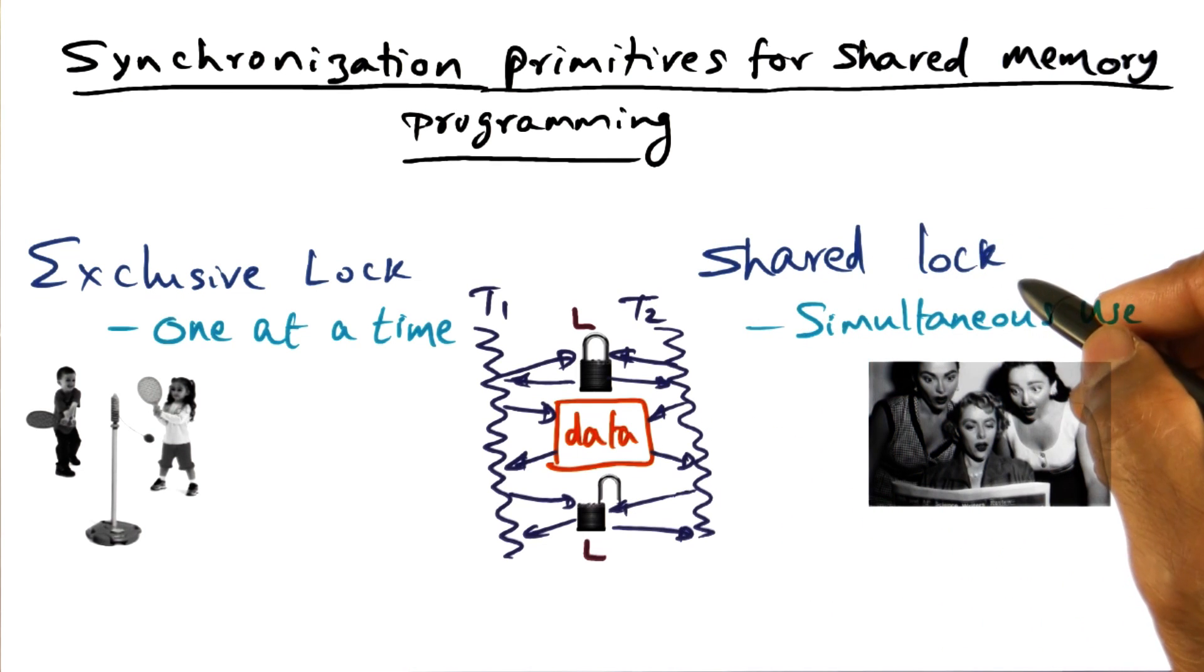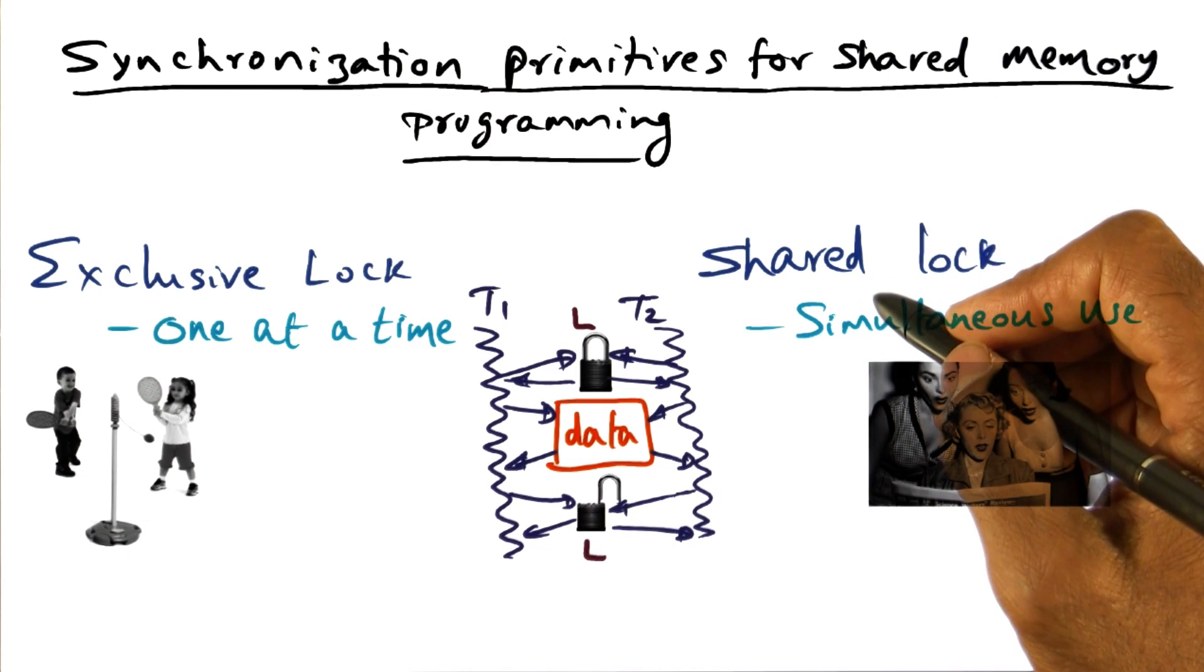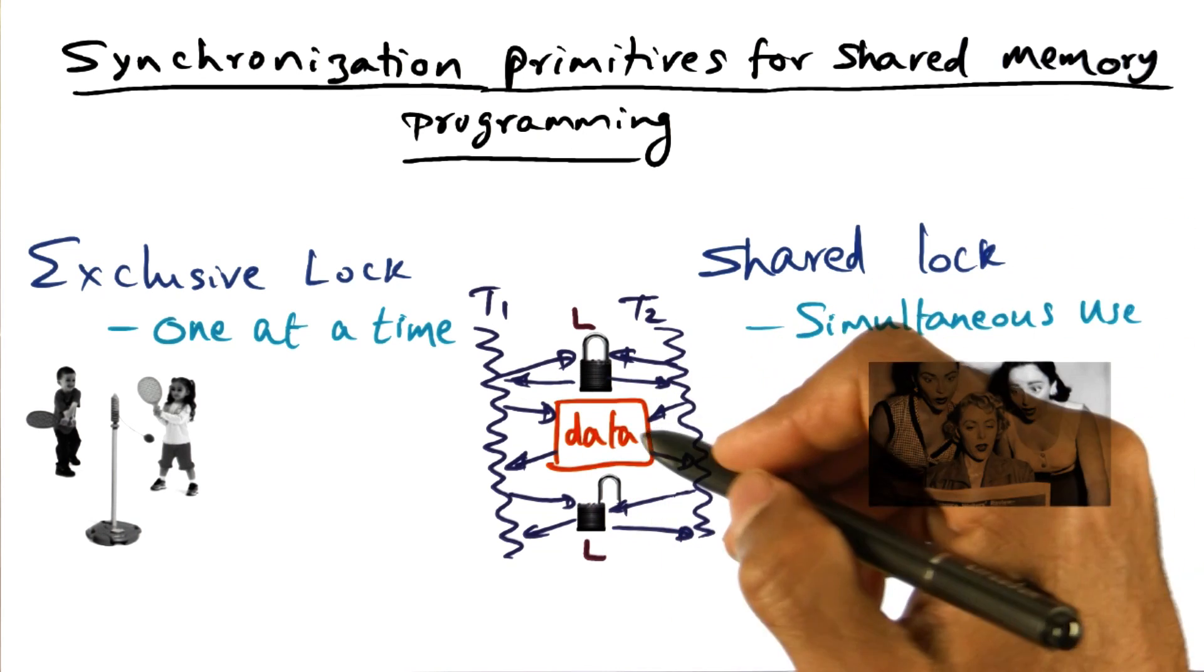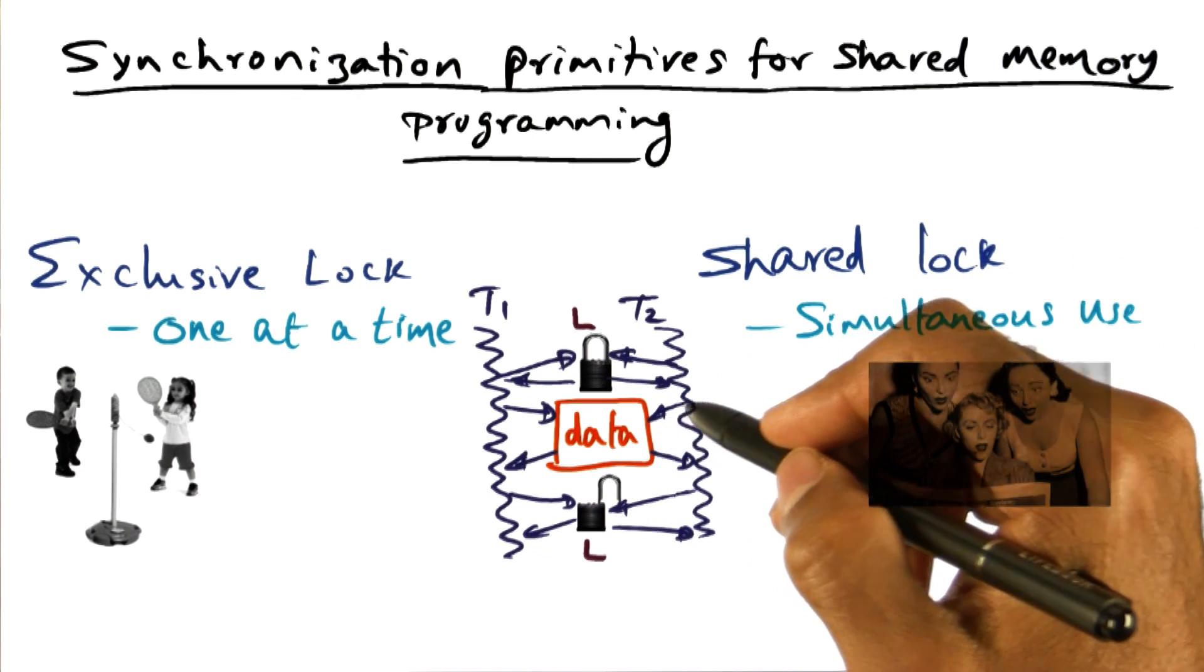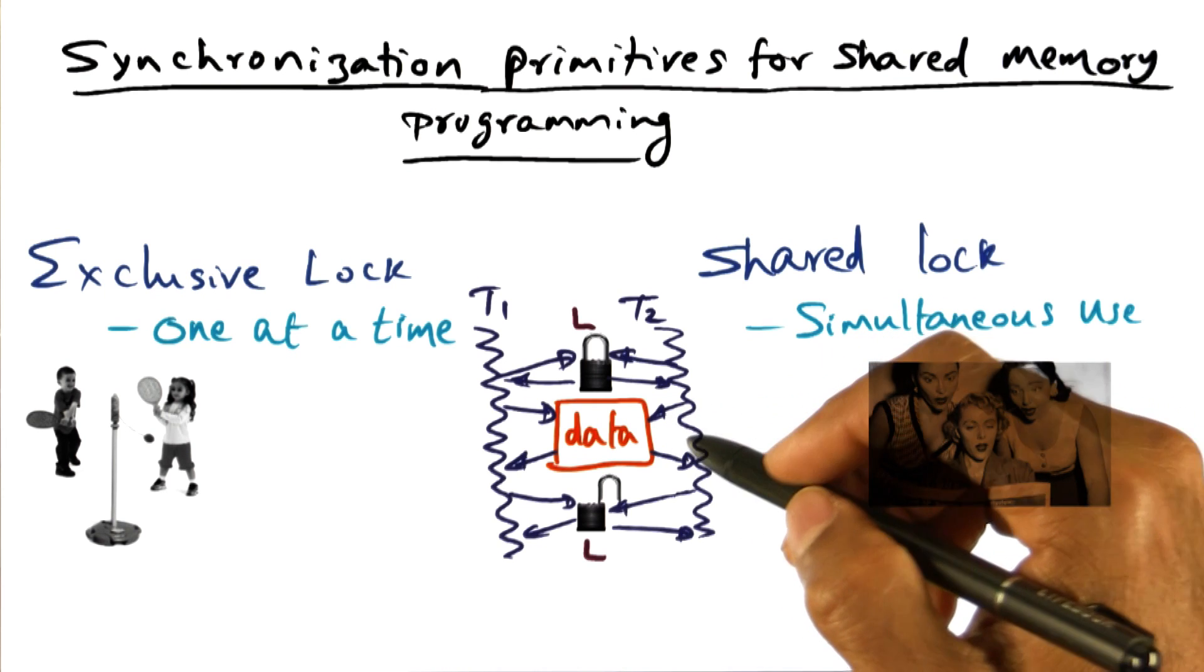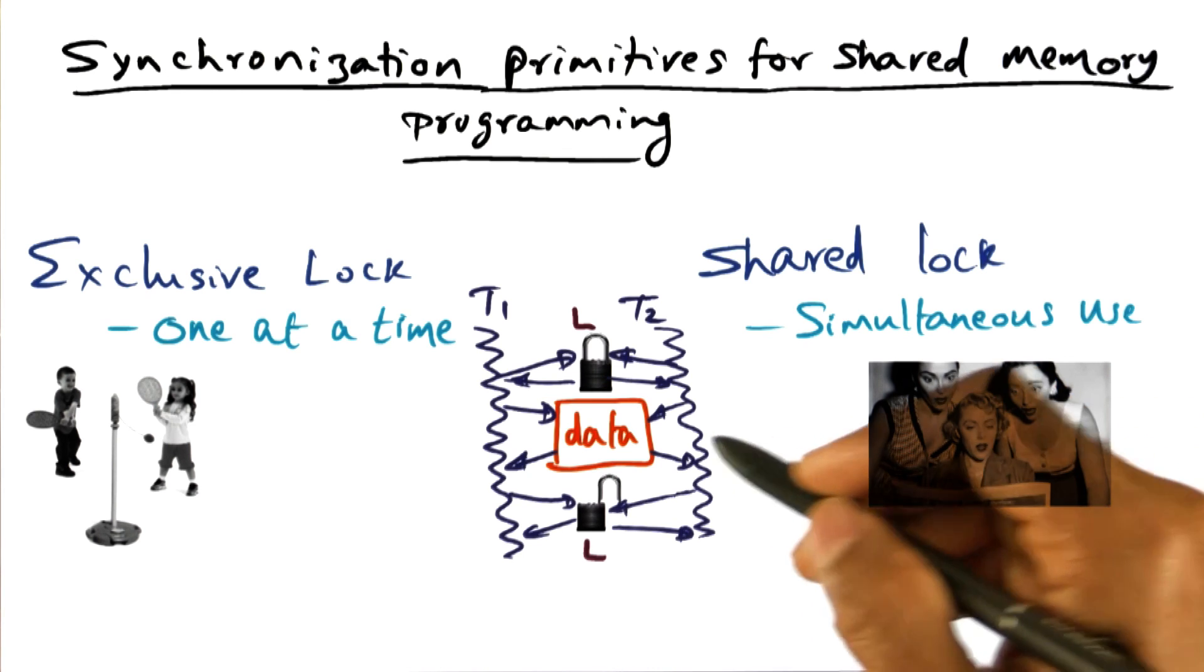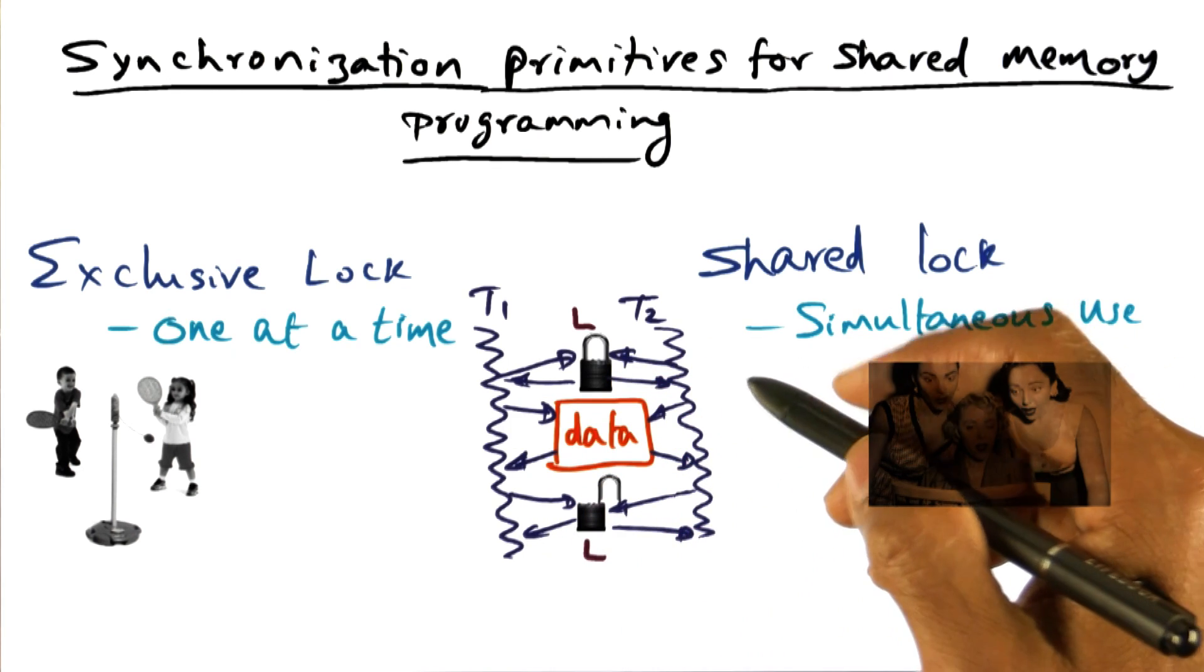You can also have a shared lock. Now what that means is that this lock is something that allows multiple threads to access the data at the same time. Well, under what conditions would that be meaningful? Well, here is an analogy again. If there's a newspaper and multiple people want to read the newspaper at the same time, perfectly fine to do that, right? That's the same sort of thing that happens often in parallel programming.